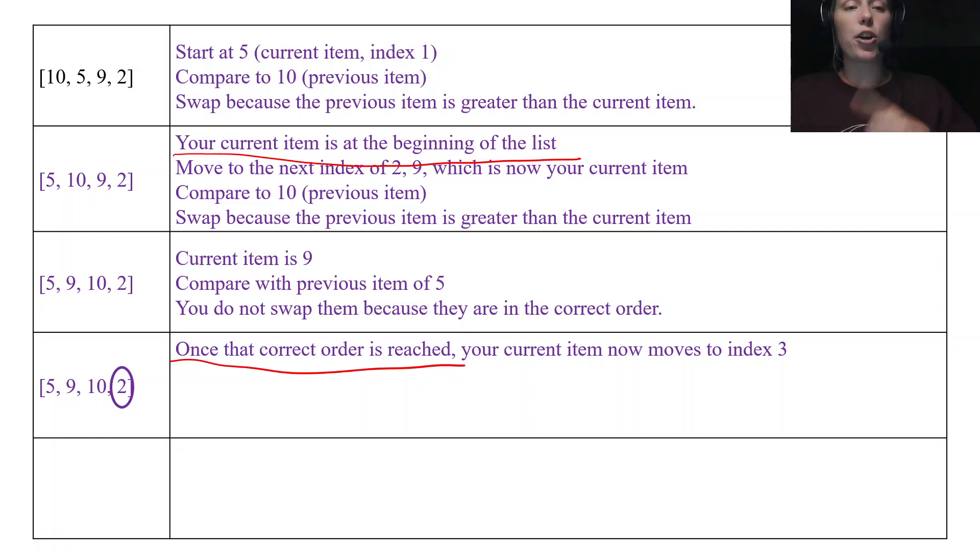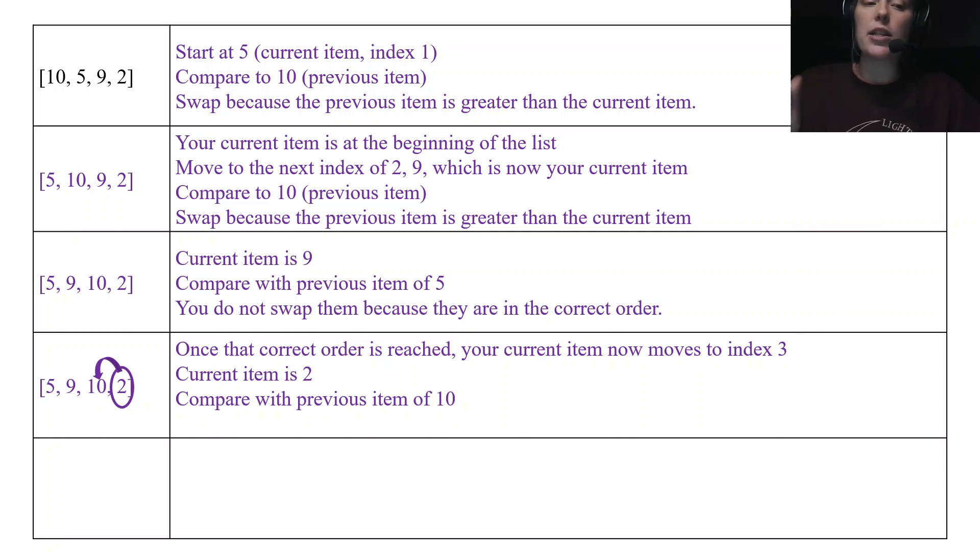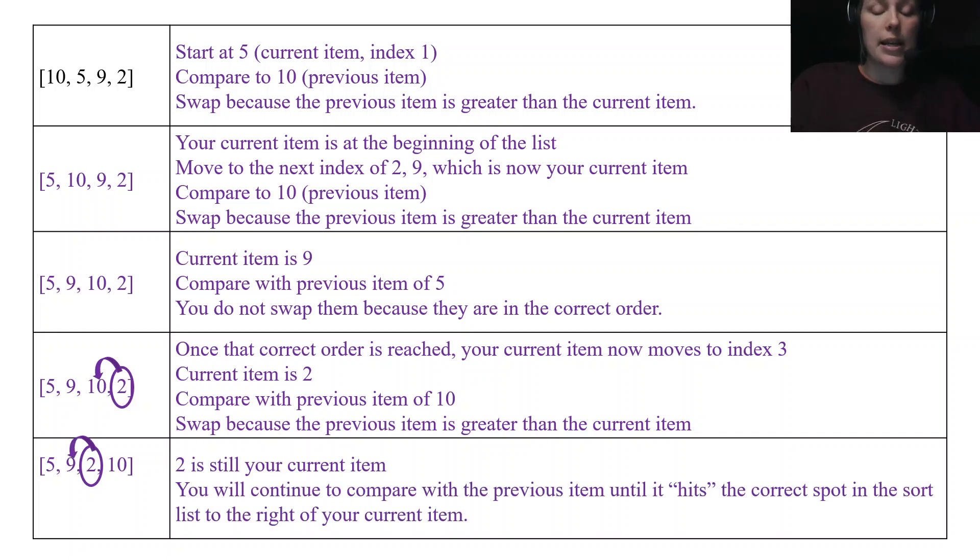That loop of inserting into the correct position stops when your current item is at the beginning of the list or once the correct order is reached. And then your current item or your current index moves up 1. So first our current index was index 1. Then our current index was index 2. Now our current index is index 3. Our current item is 2, but the current index is index 3. And again, we compare. So we're going to do a series of comparisons and swaps. So I compare 2 to 10. 2 is less than 10, so I swap them. Then I compare 2 to 9. 2 is less than 9, so I swap them. I compare 2 to 5. 2 is less than 5, I swap them.